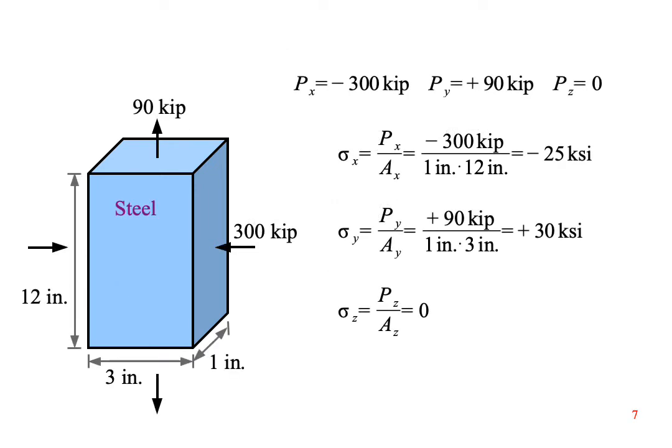The first thing we have to do is calculate the applied stresses in the three directions. Sigma x is the force in the x direction divided by the face of the block that's perpendicular to this force, which is the side face of the block. It works out to positive 30 ksi. There's no applied load in the z direction, so sigma z is zero.